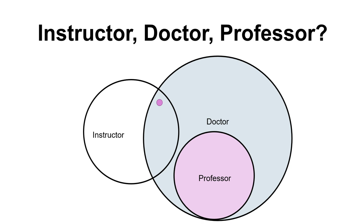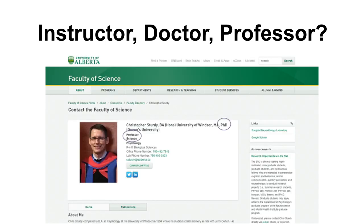I have a visual for those of you who enjoy visual interpretations. There's this tiny little pink dot in the middle - that's me. I could be called doctor because that's the title I have for my degree, but my job title means you could call me instructor. I do not fall under the professor category because that isn't my job. As a different example, I always use my graduate supervisor - Christopher Sturdy. He has a Bachelor of Arts, Master of Arts, and a PhD. Because he has a PhD, we would be very confident calling him Dr. Sturdy. And since his job title is listed as professor of science, we could also call him Professor Sturdy.